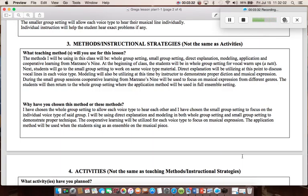Next, students will go into small group setting to work on same voice type material. Direct explanation will be utilized at this point to discuss vocal lines in each voice type. The modeling method will also be utilized at this time by instructor to demonstrate proper diction and musical expression. During the small group sessions, cooperative learning from Marzano's 9 will be used to focus on musical expression from different genres. The students will then return to the whole group setting where the application method will be used in full ensemble setting.